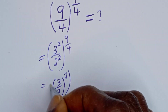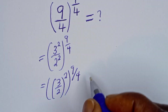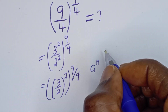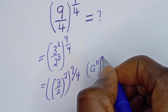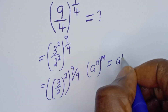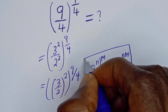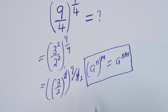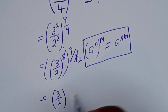This equals 3 over 2 to the power of 2, to the power of 9 over 4. Take note that if you have a raised to power n, to the power of m, this is equal to a raised to power n times m. So here, with 3 over 2, you get 3 divided by 2 to the power of 9 over 2.